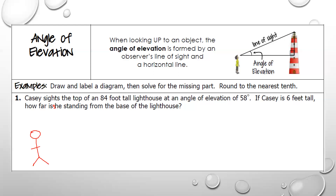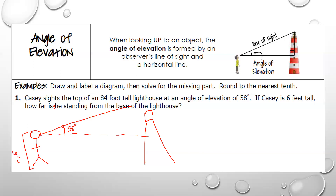We're going to sketch a picture. Clearly you don't have to be a really good artist — I'd be in trouble. Here's my lighthouse. Casey starts by looking out horizontally and then looks up, so that is the angle of elevation right there, and it says the angle of elevation is 58 degrees. If Casey is six feet tall, here's the person, here's the base of the lighthouse — that's what we're looking for.